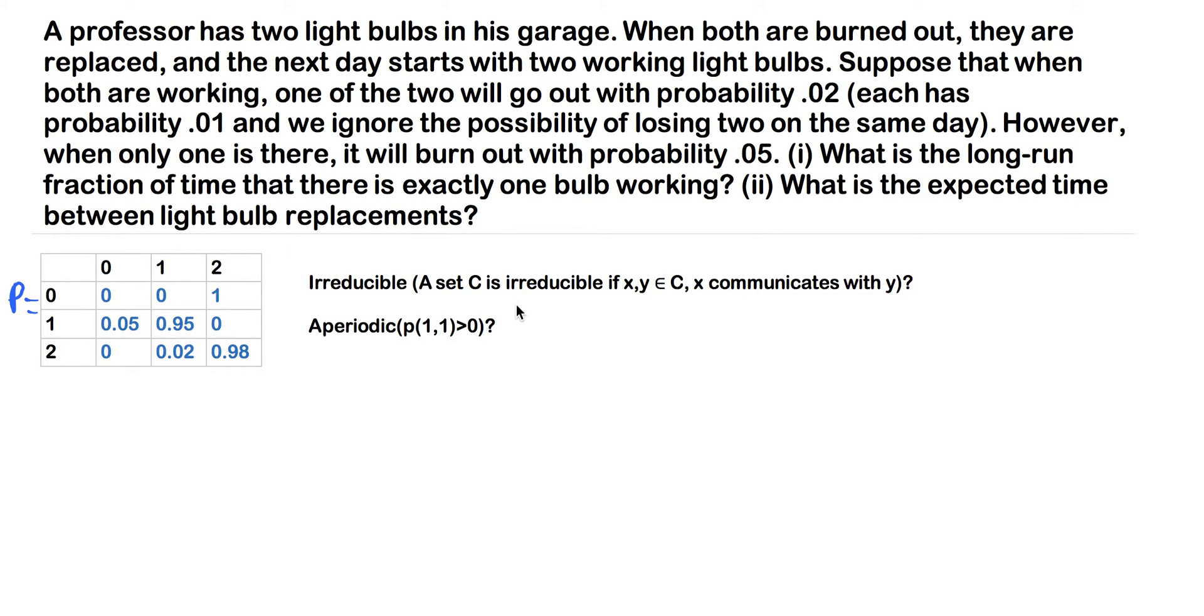And we can see here that 0 goes to 2, which goes to 1, which goes to 0. So we'll give it a green check here—it is irreducible. Now, is it aperiodic? There's a theorem in any stochastic processes book that says if the probability of starting at a state and then going back to a state is greater than 0, then it's aperiodic. And that's all this definition means here. So we see that going from 1 to 1 is greater than 0.